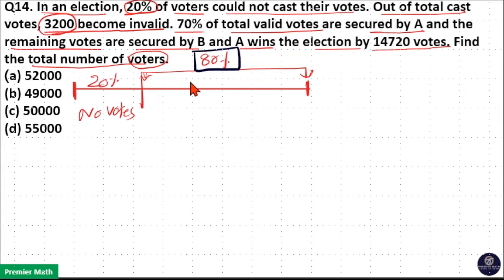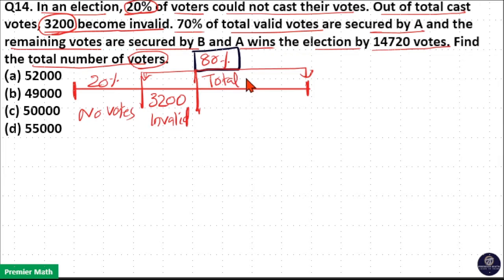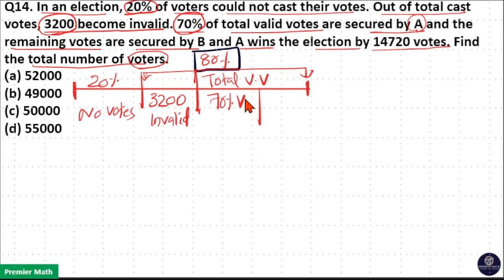3200 are invalid votes out of this 80%. The remaining are total valid votes. So, out of this 80%, 3200 are invalid and the rest are total valid votes. 70% of the total valid votes are secured by A, and the remaining 30% of the total valid votes are secured by B.